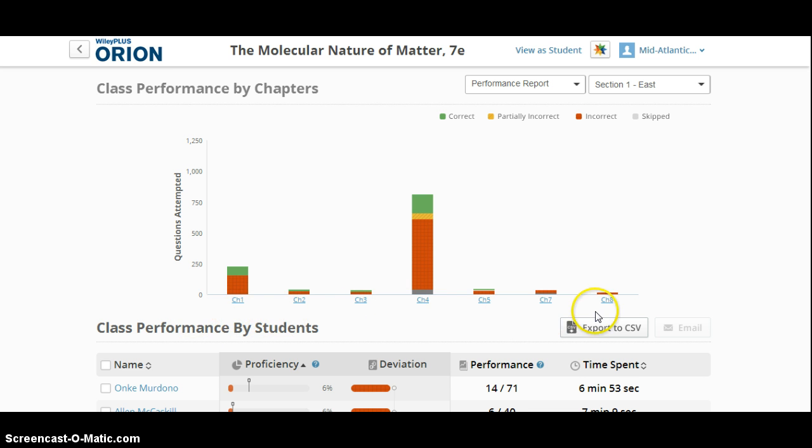Across each chapter, you can see that chapter 4 had the greatest number of questions attempted, approximately 800 questions, but you can also see how many of the questions that were answered within chapter 4 were answered incorrectly. Clearly chapter 4 is showing that students are having issues and a great conversation starter when it comes to helping them work through those.